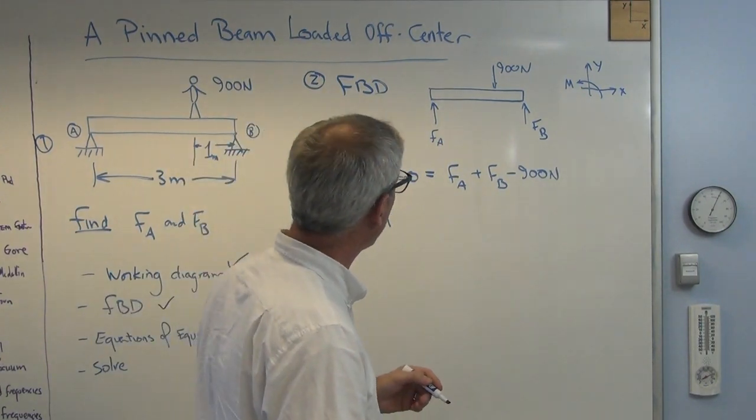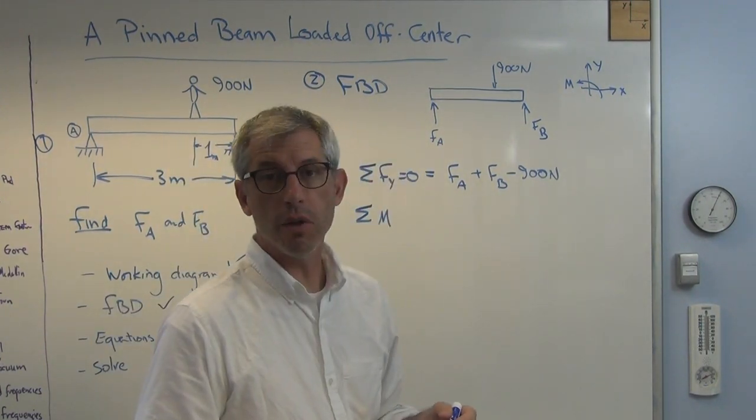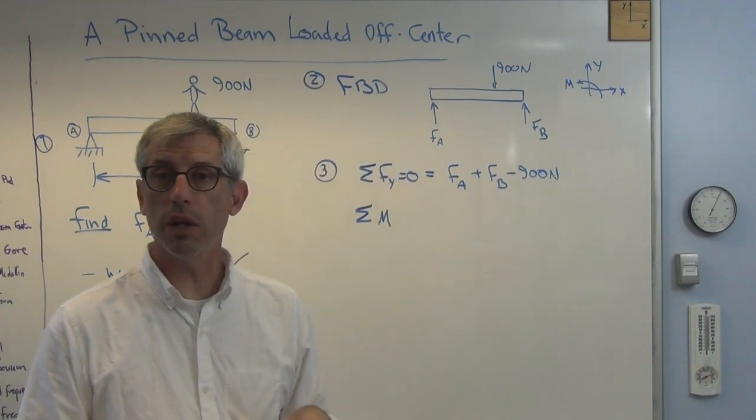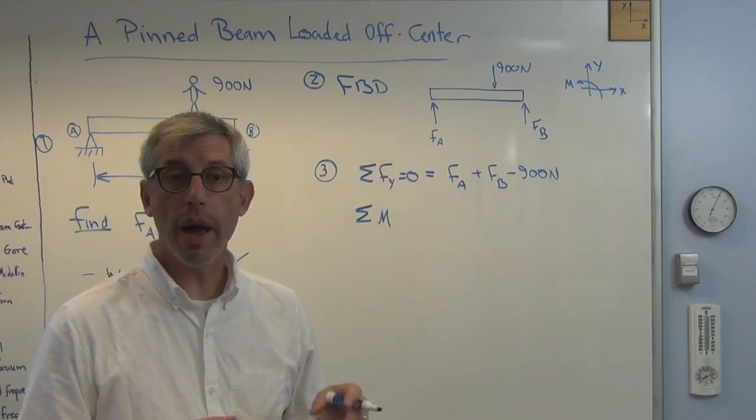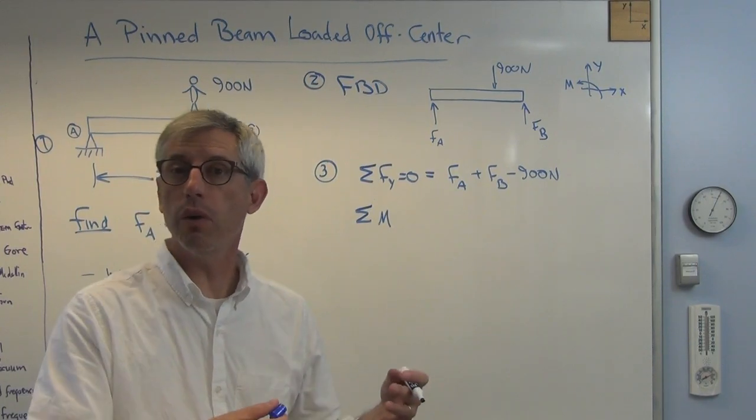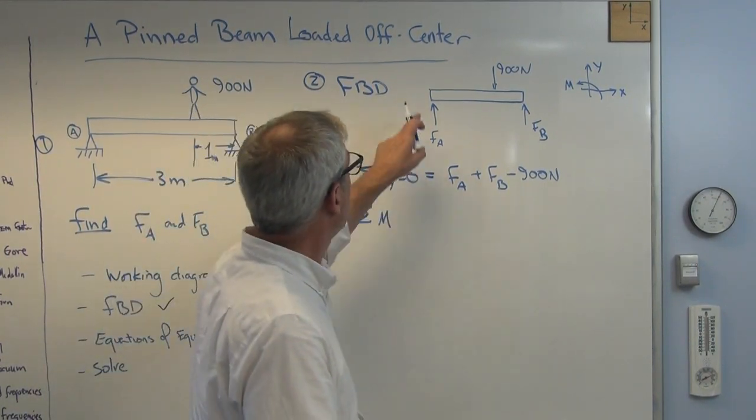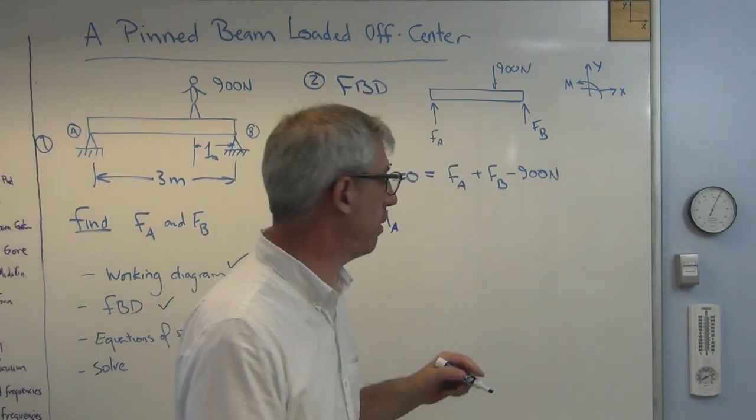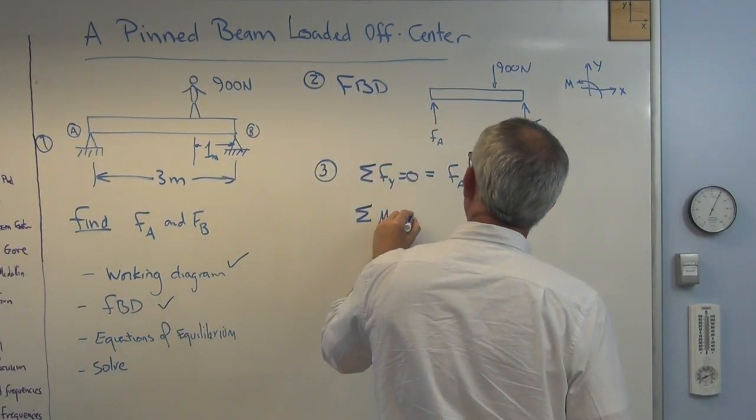Now, I got to sum the moments about somewhere. Well, it doesn't really matter where. The equation is valid no matter where I sum the moments. So it's good to sum the moments in a location that makes the math as simple as possible. It makes the resulting equation as simple as possible. Well, let's solve it at A. Like I say, if you want to pick something else, go ahead. It'll be fine. But that has to be zero.